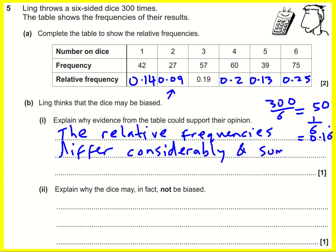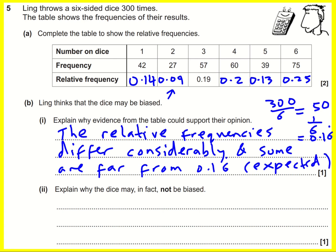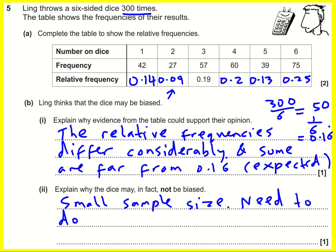Some are far from 0.16 recurring, which is what we'd expect for a non-biased die. But why might it not actually be biased? Well, we've only done 300 rolls — that's a small sample size. We'd need to do more rolls. Through natural variation, you can just happen to get lots of sixes on this occasion, and that's just how chance works.